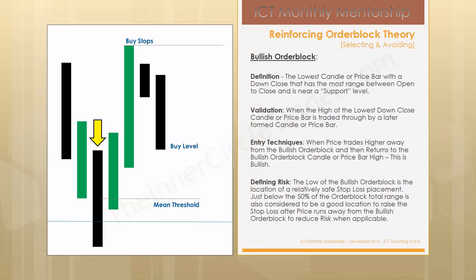Measure your Fibonacci level — the 50% level or halfway point is the mean threshold on a bullish order block. Same thing said with the bearish order block. You just don't want to see price drive down deeper than the mean threshold by very much. It can stab through it just a little bit, but we primarily don't want to see it trade down there at all. The better order blocks won't do it at all.